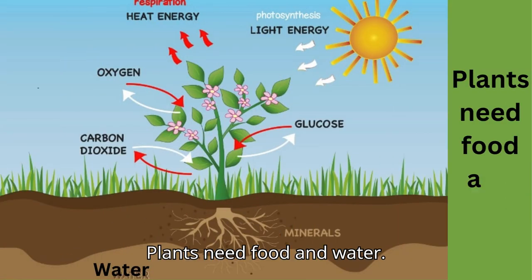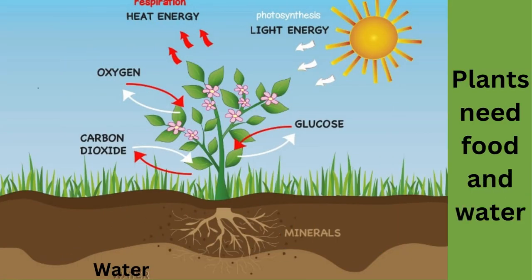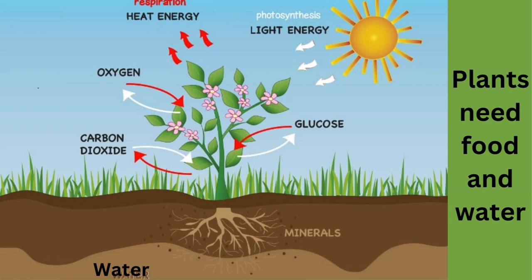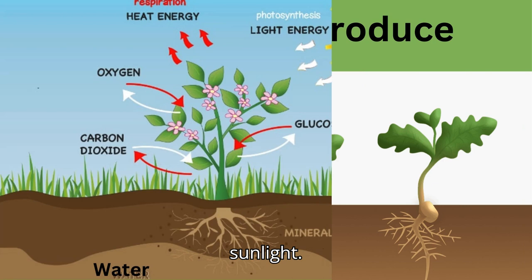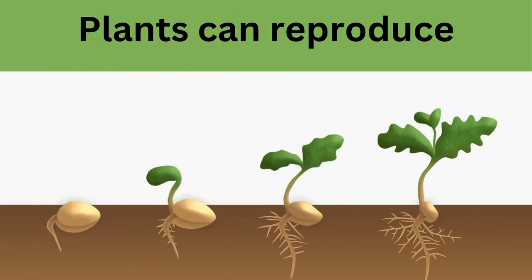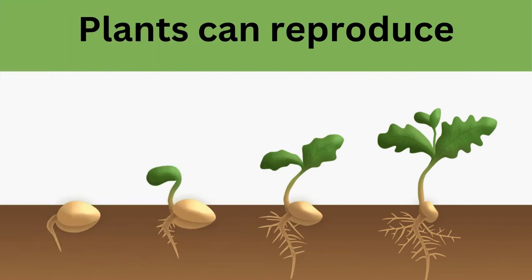Plants need food and water. They need water to grow and they make their own food with the help of sunlight. Plants can reproduce — most plants grow from seed.